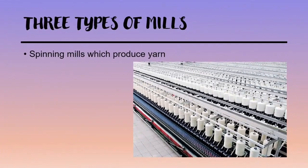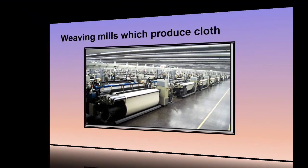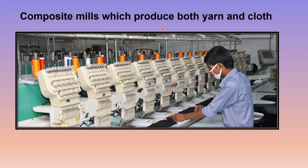Today, we have three types of mills. Number one is the spinning mill, which produces yarn — yarn is a thread or thread of fabric. Second is the weaving mill, where the thread produced in the spinning mill is used for weaving cloth. Third is the composite mill, which produces both yarn and cloth.